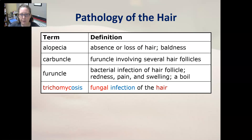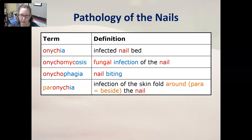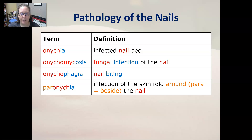Trichomycosis is a fungal infection of the hair. Moving to the pathology of the nails: onychia is an infected nail bed; onychomycosis is a fungal infection of the nail; onychophagia is nail biting; and paronychia is an infection of the skin fold around the nail—'par' meaning around or beside. That wraps up our pathology terms for the integumentary system. Thank you for your attention.